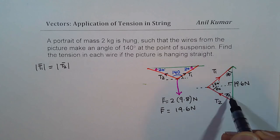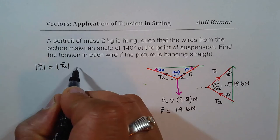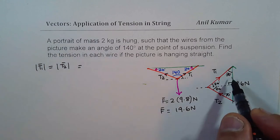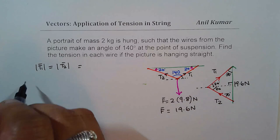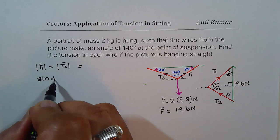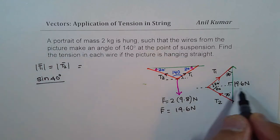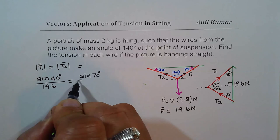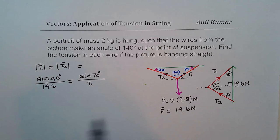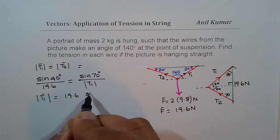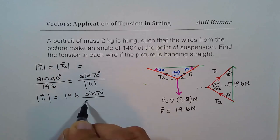So we can use the cosine law. We can say this tension is basically equal to, or let us use the sine law first. Since in this triangle, we know one combination, we can say sine of 40 degrees divided by 19.6 is equal to sine of 70 degrees divided by T1, the magnitude of T1. So cross multiply to get magnitude of T1 as equal to 19.6 times sine of 70 over sine of 40 degrees.